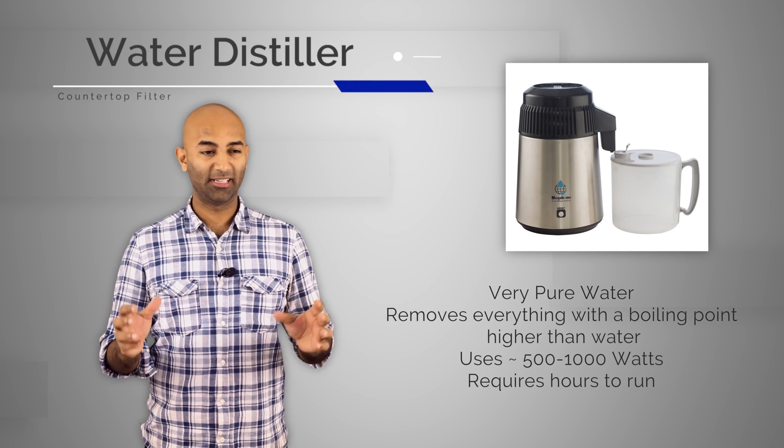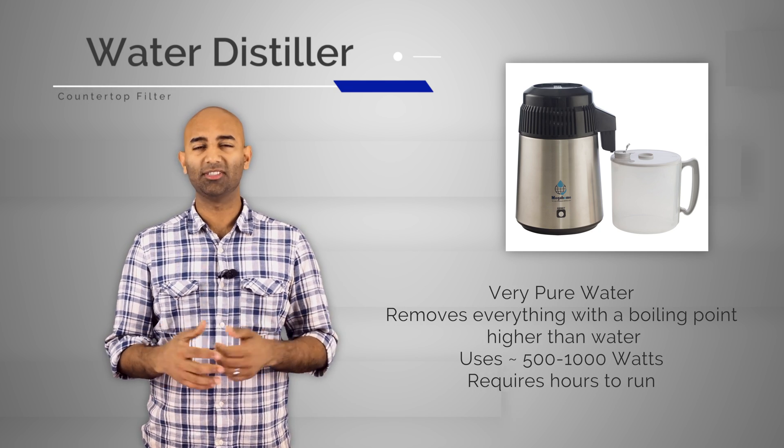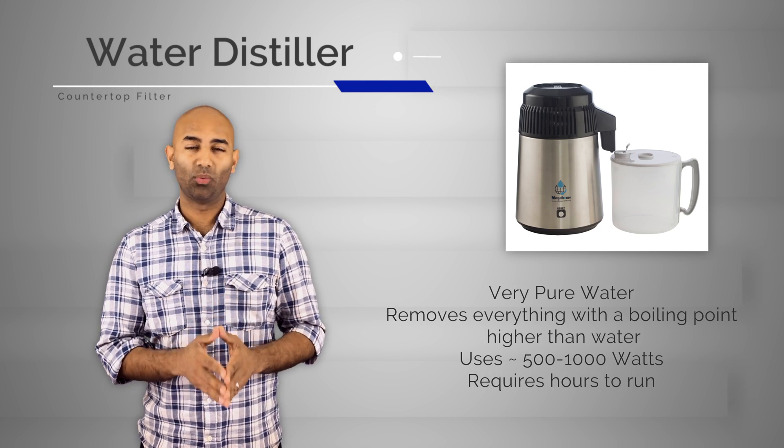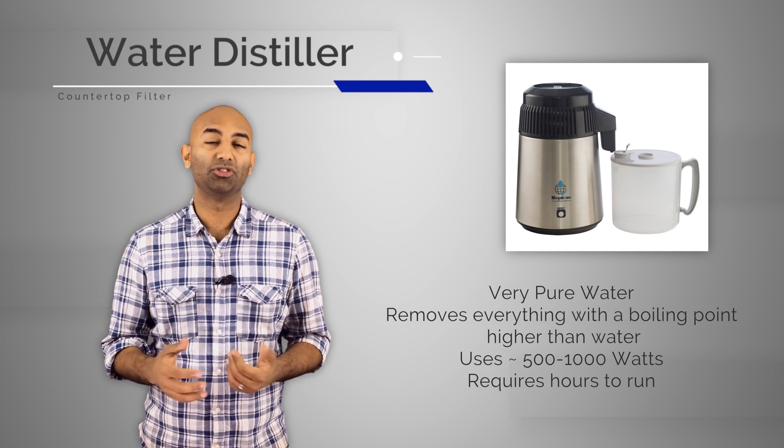They might take five to eight hours to get like a pitcher or a liter or cup of water based on your system. If you're running 800 to 1,000 watts for five to eight hours that can easily be three, four, five kilowatts which is a lot of energy.